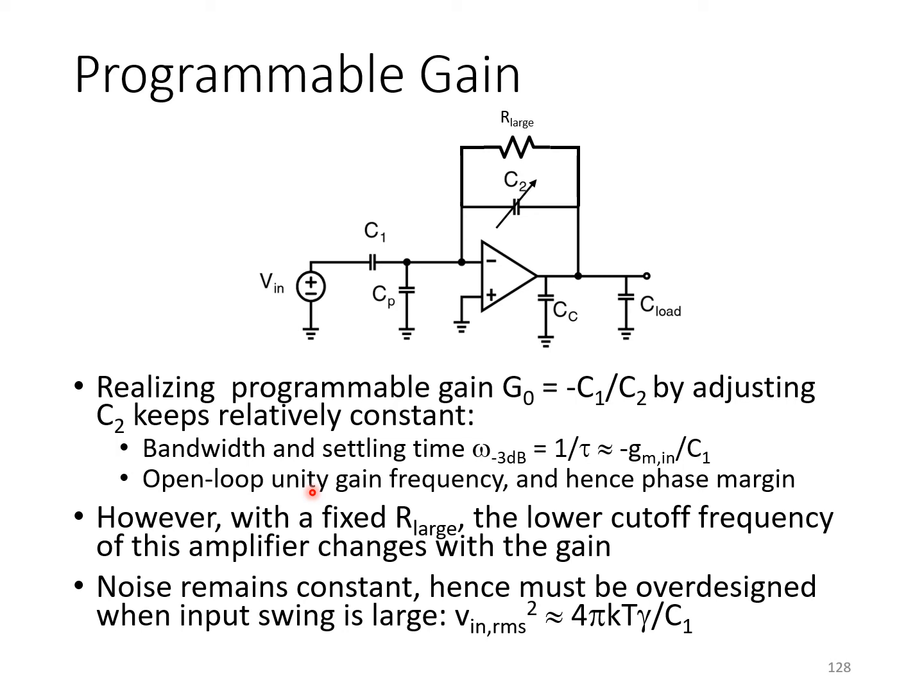So, there's no need to worry about changing the loop dynamics as you adjust for different gain. However, remember that the lower cutoff frequency formed by R_large and C2 is still there. So, as you change C2, that lower cutoff frequency will change.